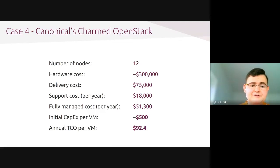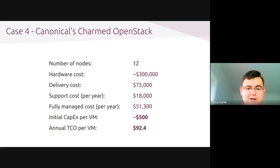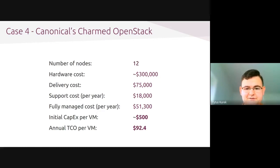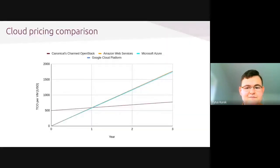Now let's look at the numbers. The initial CapEx per VM — the investment you have to make at the beginning — is around $500 per VM. But then the annual TCO per VM is below $100, which is much less compared to what public cloud providers offer. If we look at those numbers from a three-year point of view, it becomes evident that after a year it makes much more sense to run a private cloud infrastructure based on Charmed OpenStack instead of using your leading public cloud providers.